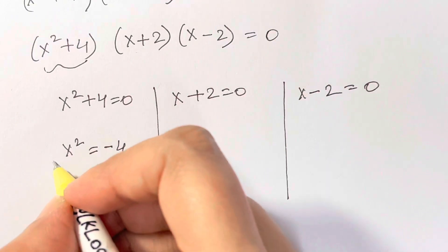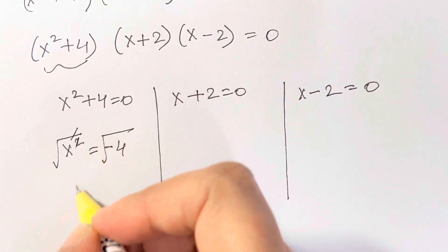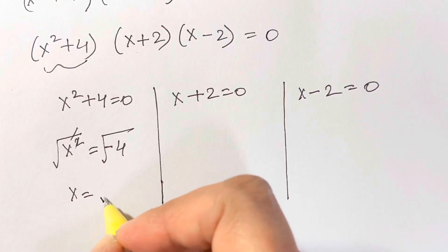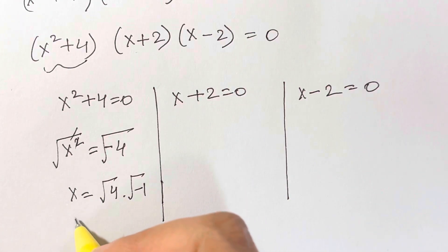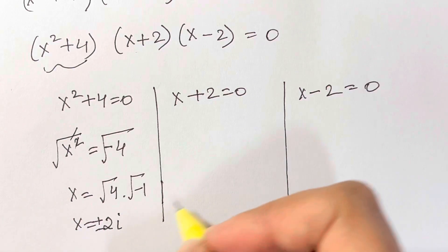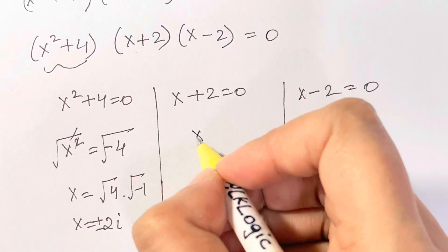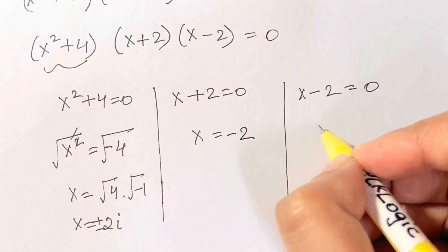Take square root on both sides. We cancel out this, so x is equal to square root of 4 times square root of negative 1. So x is equal to plus or minus 2 times square root of negative 1, which is i. So plus or minus 2i. Here we have x is equal to negative 2, and here we have x is equal to plus 2.